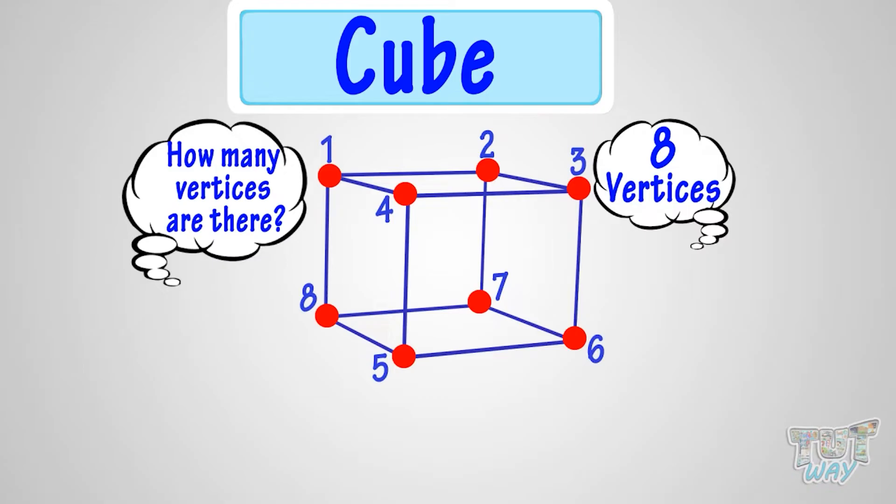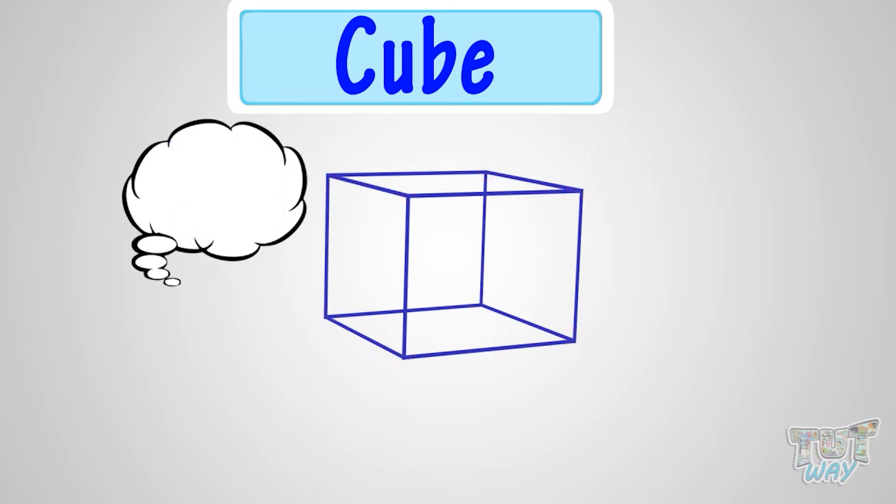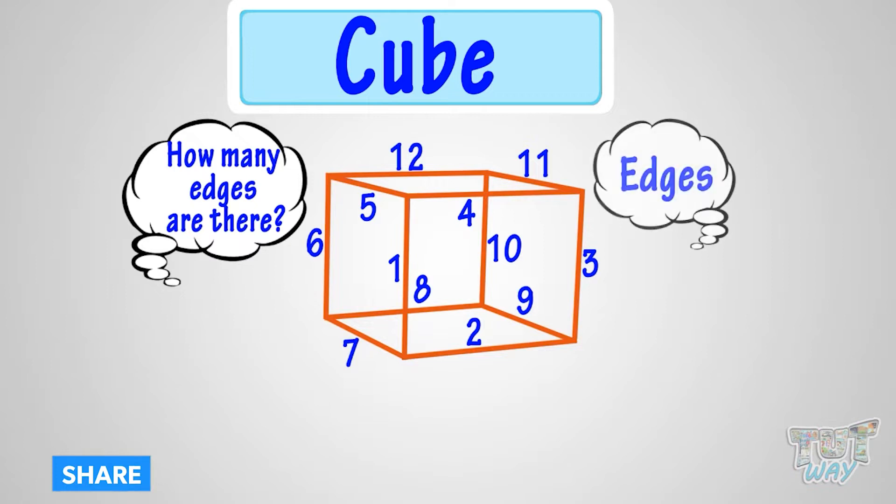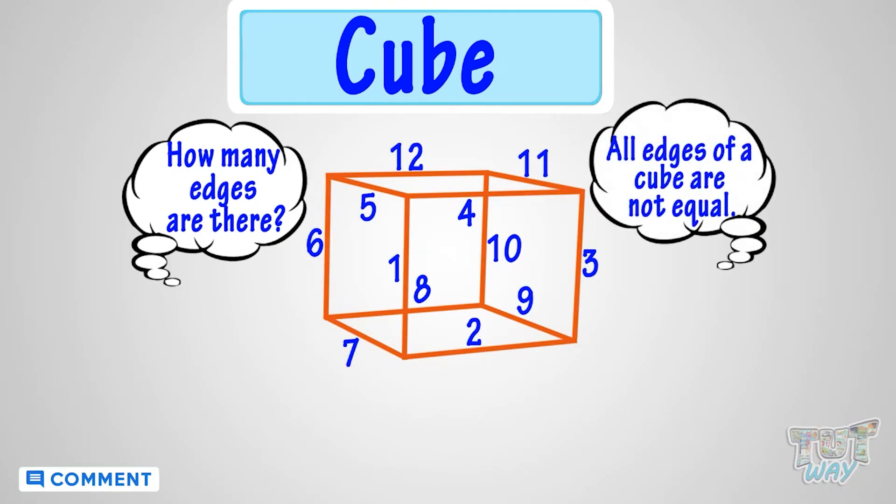Good! Now let's count its edges. 1, 2, 3, 4, 5, 6, 7, 8, 9, 10, 11, 12! So a cube has 12 edges also. All are equal. Good!